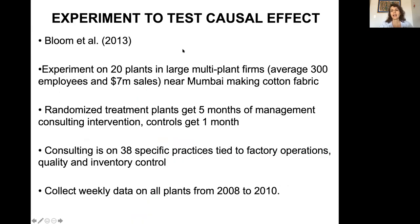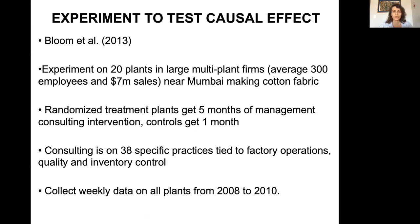Does management have a causal effect on firm performance? To answer this question, Bloom and co-authors undertook an experiment on 20 plants in large multi-plant firms in India, near Mumbai, making cotton fabric. Specifically, they randomized treatment across plants — treated plants received five months of management consulting, while control group firms received only one month. The consulting covered 38 specific managerial practices tied to factory operation, quality, and inventory control, with weekly data collected on all plants from 2008 to 2010.